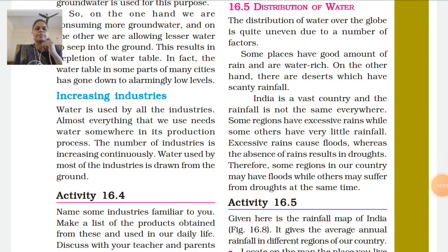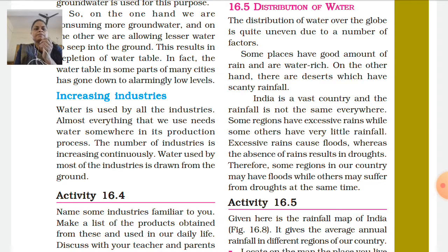Hello students, welcome back to online classes. We were discussing chapter 16 — water, the precious source. We have already discussed some reasons for the depletion of the water table, and the next reason is the distribution of water in India, or the distribution of water over the globe.